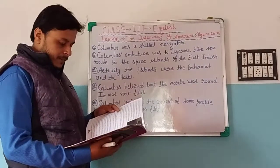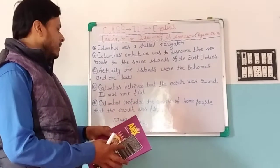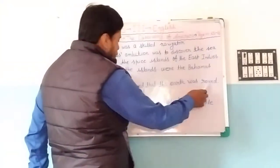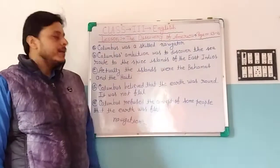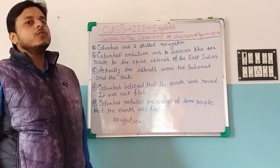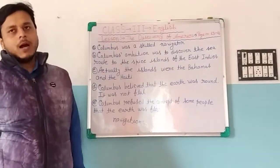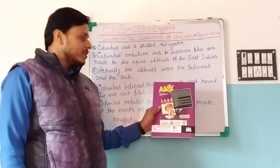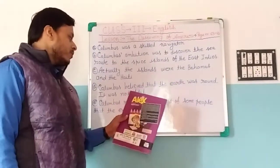Next question, number three: What was his opinion about the Earth? Columbus believed that the Earth was round — it was not flat. In earlier ages, people believed that the Earth was flat, and if you went too far on the sea, you would surely drop off. But Columbus didn't believe this concept. He believed that the Earth was round, not flat.